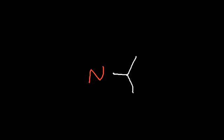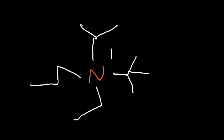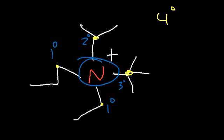Let's try one more example. Here the nitrogen is attached to four carbon atoms, so it's quaternary. Notice that the carbon atoms attached to the nitrogen are different types — primary, primary, secondary, and tertiary — so we can't use those carbon atoms to characterize the nitrogen. This is known as an ammonium ion, and since it has four groups attached, it's a quaternary ammonium ion.